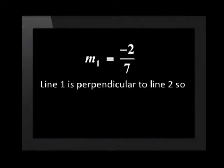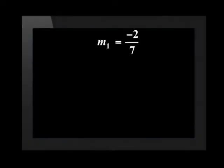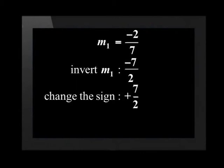Let's do one more. If line 1 has a gradient of negative 2 over 7 and line 2 is perpendicular to line 1, what is the gradient of line 2? The shortcut says we must invert the given gradient and change the sign. Turn negative 2 over 7 upside down, which gives negative 7 over 2, then change the sign from negative to positive, and the gradient of line 2 is positive 7 over 2.